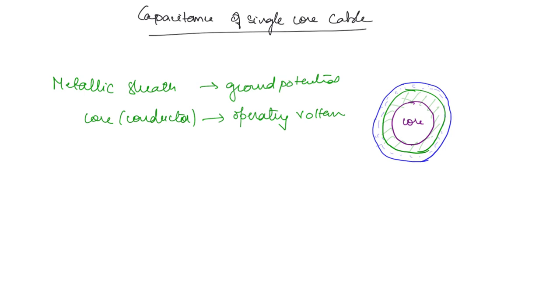Now, we will see what is the expression for capacitance. Here we will try to redraw this cable. This is the core and this small thickness is the metallic sheath, and this in between surface is the dielectric.